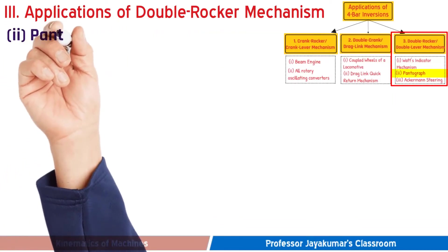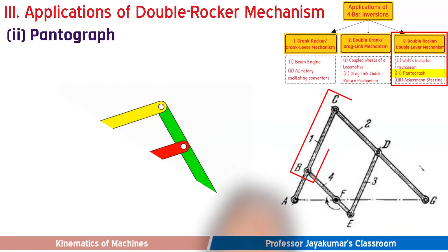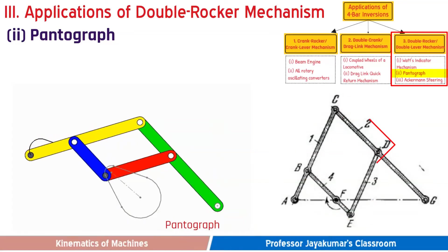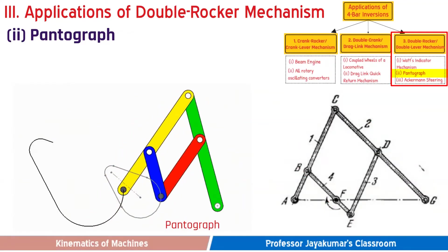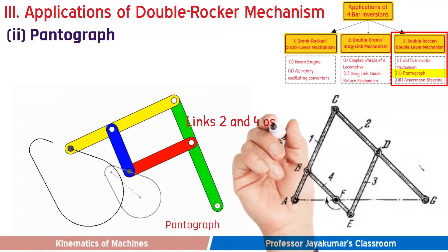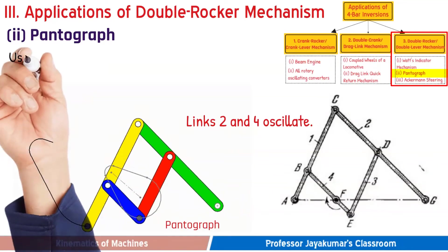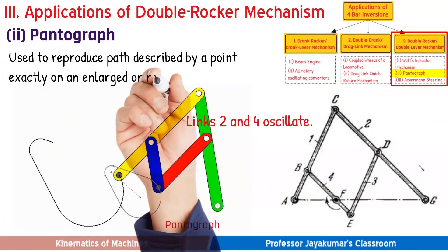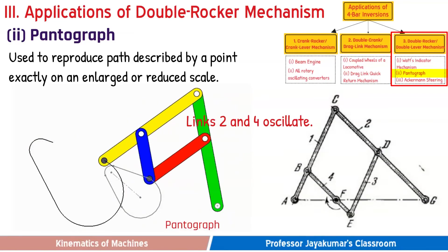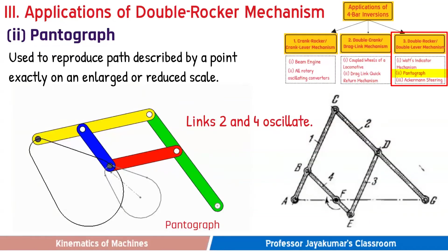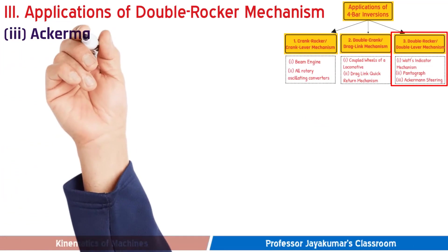The second application is Pantograph. The basic form of a Pantograph is a 4-bar mechanism in the form of a parallelogram. Link BC is equal to link DE and link CD is equal to link BE, thus BC and DE form a parallelogram. Here links 2 and 4 oscillate, hence it comes under double rocker mechanism. The Pantograph is a device used to reproduce a displacement exactly in an enlarged or reduced scale. Pantographs are used in machine tools such as profile grinding, engraving machines, and in guiding a cutting torch to generate a contour similar to that of a template.